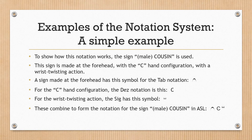Examples of the notation system — a simple example. To show how this notation works, the sign MALE COUSIN is used. This sign is made at the forehead with the C hand configuration with a wrist twisting action. A sign made at the forehead has the corresponding TAB notation symbol. For the C hand configuration, the DES notation is a capital letter C. For the wrist twisting action, the SIG has its symbol as shown. These combine to form the notation for the sign MALE COUSIN in ASL.